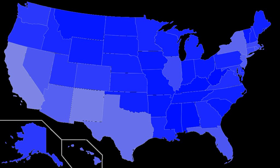As an example, while both Spanish and English have equivalent status in the local courts of Puerto Rico, under federal law, English is the official language for any matters being referred to the United States District Court for the territory. The use of English in the United States is a result of English and British colonization of the Americas.